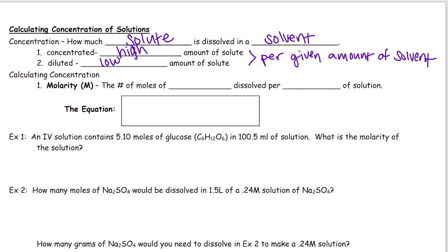So we use the term molarity, that's abbreviated with a capital M. We use molarity to discuss the concentration of something. Molarity stands for the number of moles of solute dissolved per liter of solution. So the equation for this looks like this. It's capital M for molarity equals moles of solute per liter of solution.